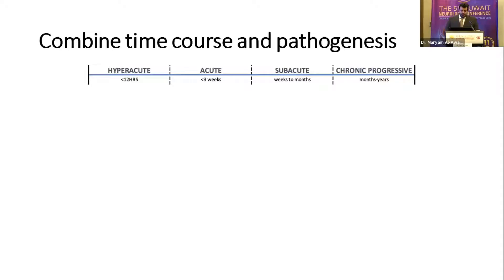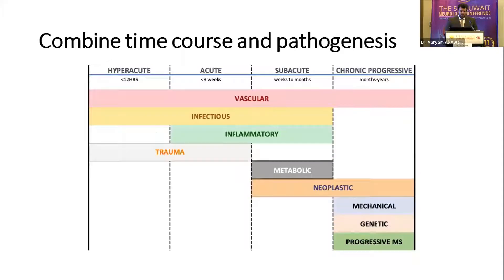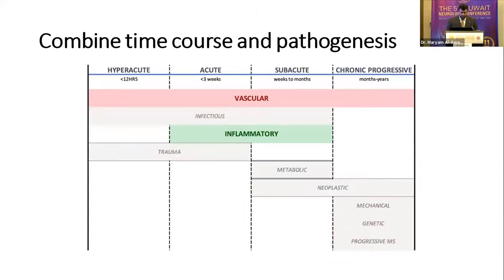Generally speaking, when we look at myelopathy in the textbook, they are usually categorized in two ways: by time course — hyperacute, acute, subacute, and chronic — and by pathogenesis, whether infectious, inflammatory, vascular, etc. The problem is when you combine both categorizations, you end up with overlap. For the sake of time, we will focus on two important categories: vascular and inflammatory, both of which can present with different timeframes.